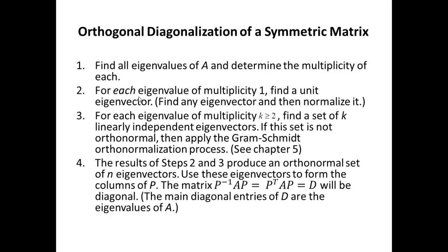Again, the Gram-Schmidt process is discussed in detail in chapter 5. If you have executed steps 1, 2, and 3, the results produce an orthonormal set of n eigenvectors. Use these eigenvectors to form the columns of P. Then P inverse times A times P equals P transpose times A times P, meaning P is orthogonal, and this product equals D, a diagonal matrix — we have orthogonally diagonalized the symmetric matrix A. Thank you very much.